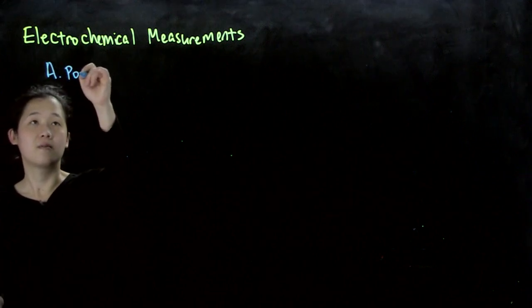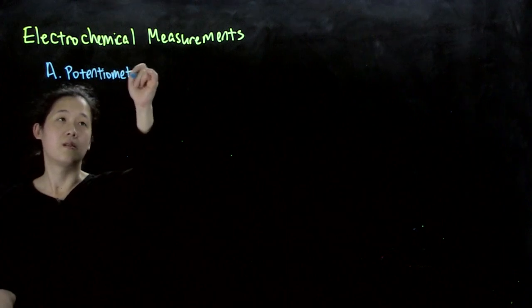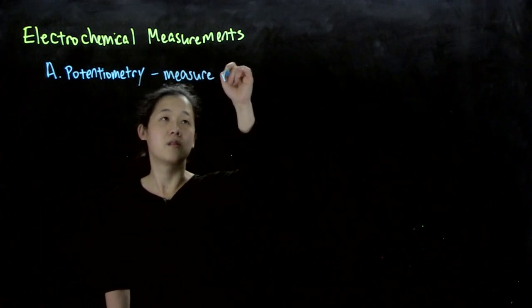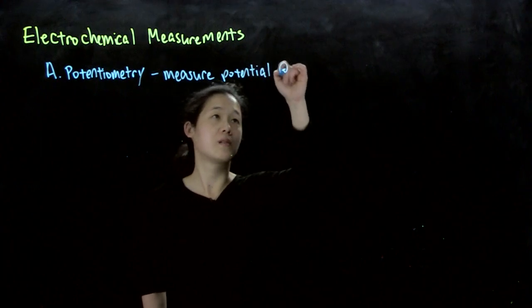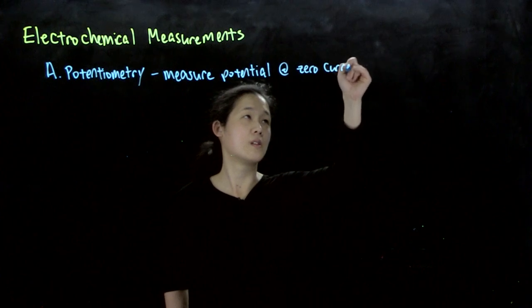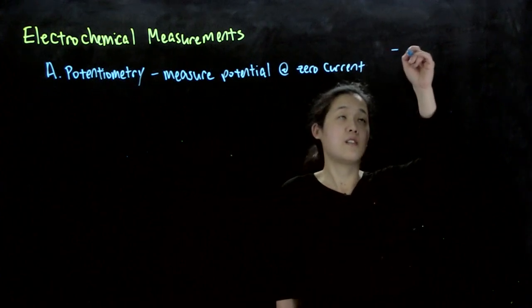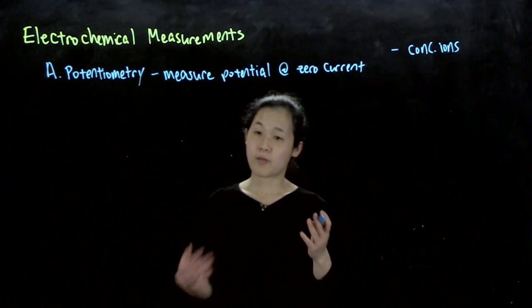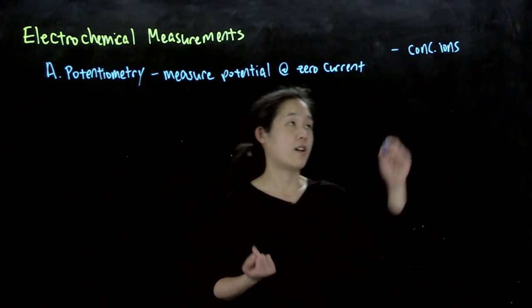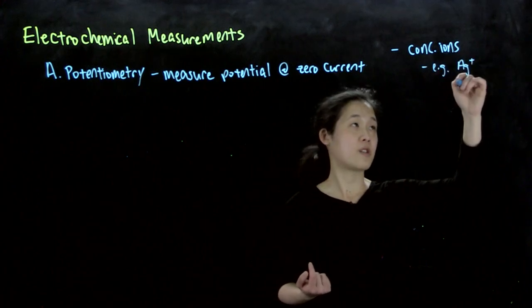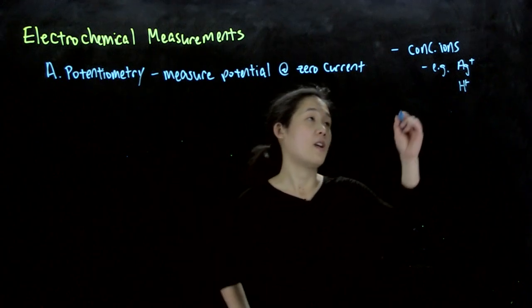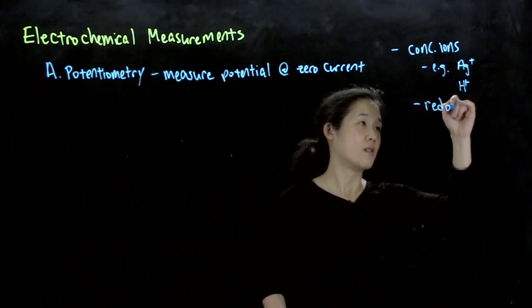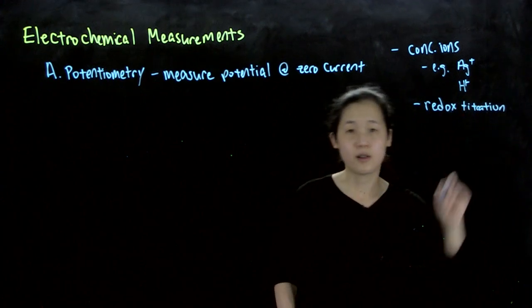So the first one is potentiometry. This is when you measure a potential at zero current. And this is useful if you want to find your concentration of ions. So there's a lot of selective electrodes that, for example, like a silver selective electrode, you can measure silver concentration in solution. We can also measure our protons, so the pH meter is based on potentiometry. And then we can also find potentials at which we can find our reduction potential of different species by doing what's called a redox titration.